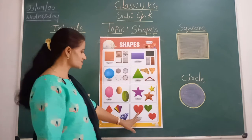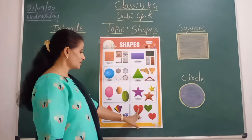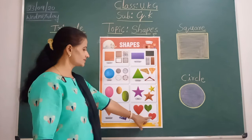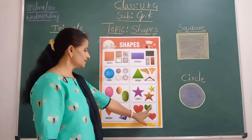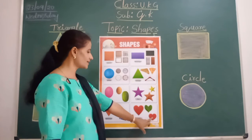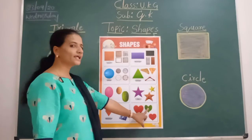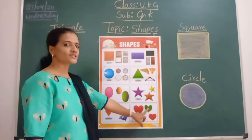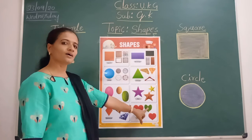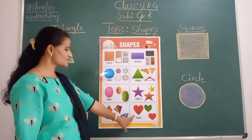Last: heart. See here — heart. Which color, children? Red color. Heart shape is here — red color. So, leaves — we saw leaves. Leaves also heart shape. What is the shape? Heart.